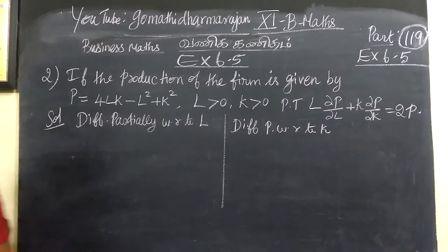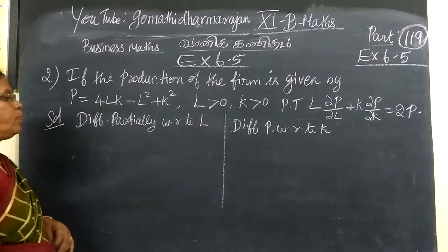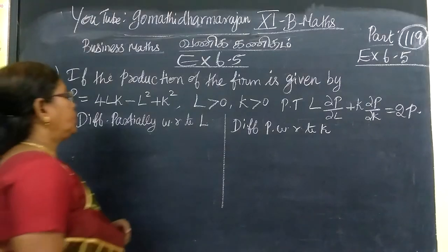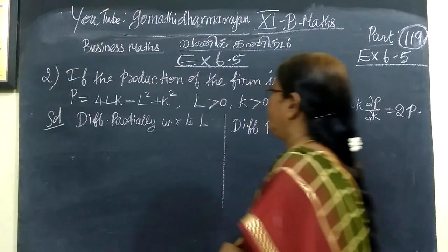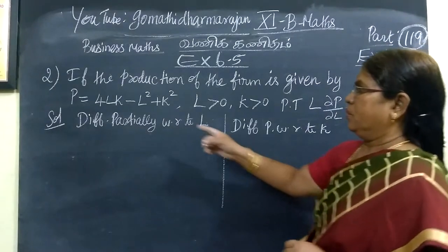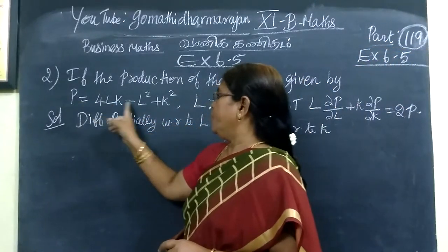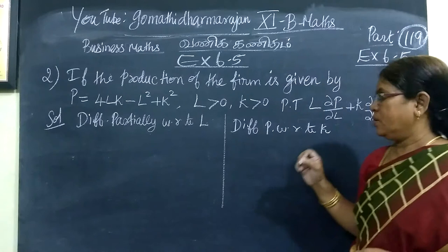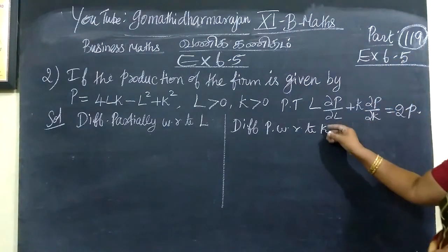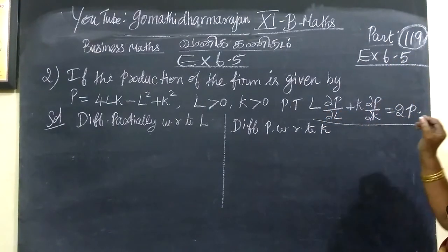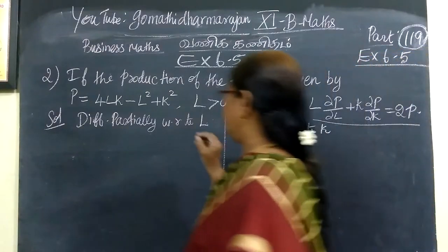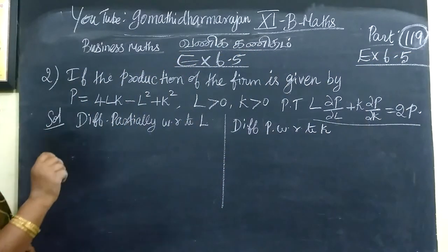So, this question is question number 2 in exercise 6.5. The production of the firm is given by P equal to 4LK minus L square plus K square. We are proving this one. This is proof number 1. Production function is 4LK minus L square plus K square.